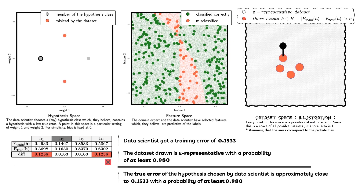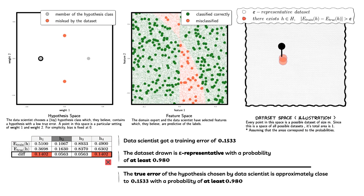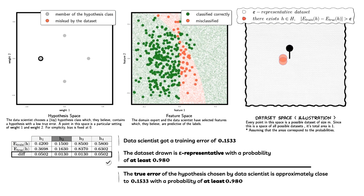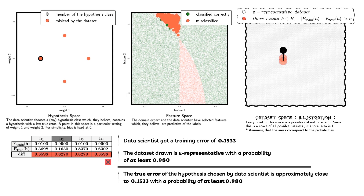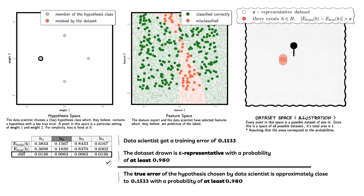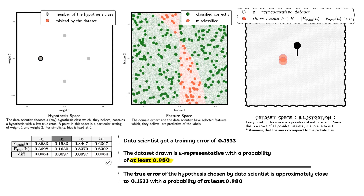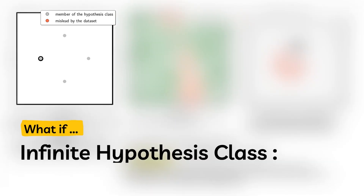Let us look at a few more epsilon-representative data sets. This is a data set which is simultaneously misleading for two hypotheses — this tells us that the red areas overlap. Some data sets are simultaneously misleading for all four hypotheses. So when we say the white area is at least 0.980, we are assuming the worst-case scenario where the red areas do not overlap.